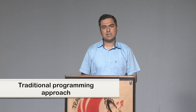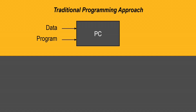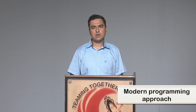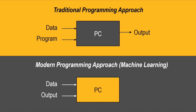In the traditional programming approach, we give data and a written program as input to the computer and get the output. But in the machine learning approach, we give the data and the corresponding output, and the computer automatically writes the program. This is exactly what machine learning is.